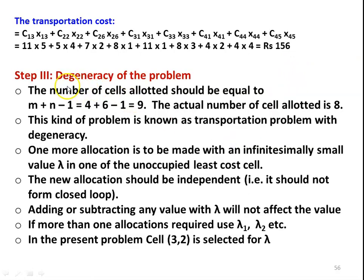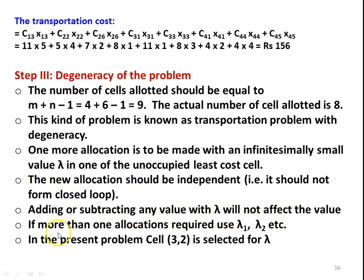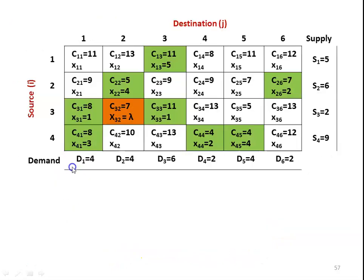This is a degenerate type of problem. The number of cells allotted should equal m + n − 1 = 4 + 6 − 1 = 9, but the actual number of cells allotted is 8. This kind of problem is known as a transportation problem with degeneracy. One more allocation must be made with an infinitesimally small value lambda — a very small value that makes an insignificant effect on supply or demand. Lambda is assigned to one of the unoccupied least-cost cells, and the new allocation should be independent, i.e., it should not form a closed loop.